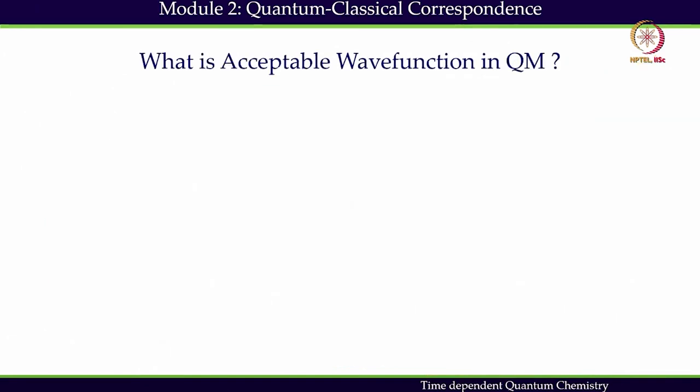I will write down what is an acceptable wave function in quantum mechanics. Acceptable wave function psi(x,t) — a particle will be represented by this wave function and psi(x,t) will be considered a physically acceptable wave function. A physically acceptable wave function is also called a well-behaved wave function in quantum mechanics, if and only if the following conditions are met.